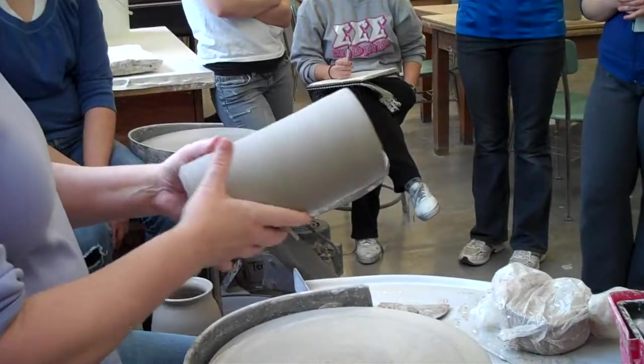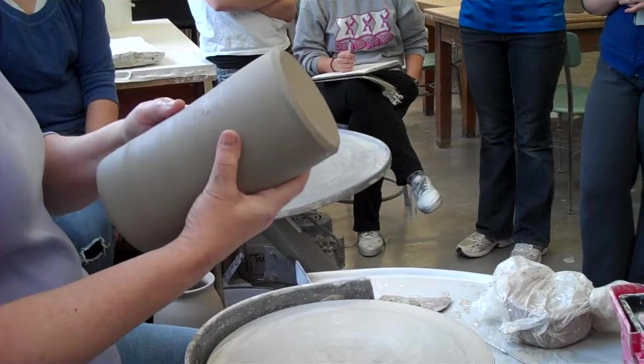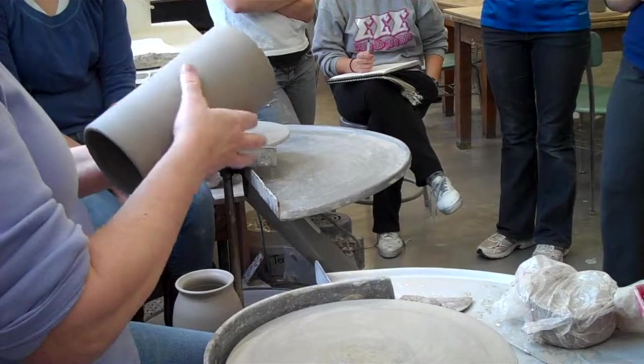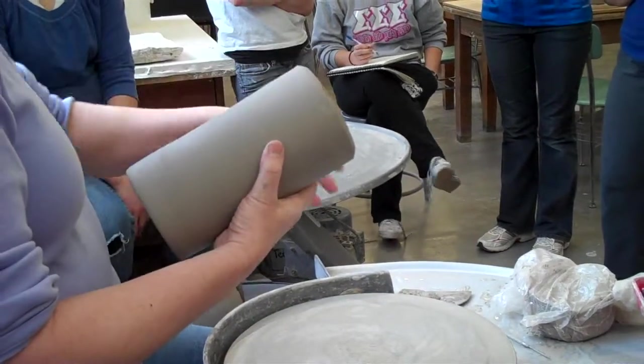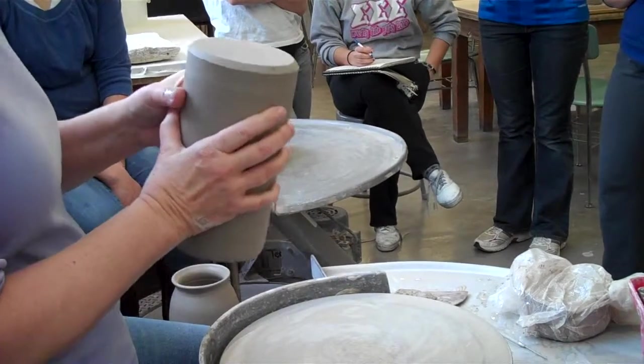What you need to do if you're going to trim a pot, now this one, obviously, I don't need to trim that much because I did a pretty good job of cutting the excess clay off before I took it off, and it's just a cylinder.